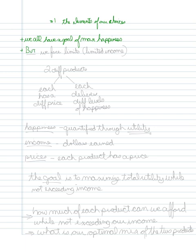But we face limits, that limit being limited income. And so, what this then means is that there are three things that we basically are continually thinking about when we're trying to make a choice between two different products.